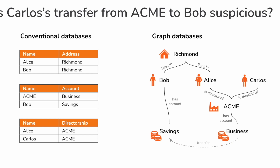It would start at Carlos and trace along the links down to Acme and up to Alice, through Richmond, down to Bob and down to Bob's savings account. You don't need to tell it where to look — it just follows the links until it finds the shortest path between Carlos and Bob. If it can get from one account to another in a relatively small number of steps, then they're probably related parties.